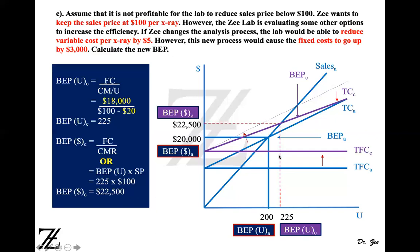Where the solid purple total cost line meets the sales line is the new break-even point: 225 units and $22,500. Compared to the original model in part A, you had to sell 200 units; now you have to sell 225 units. So it is not recommended to proceed with this new process, as both the unit quantity and dollar sales required to reach break-even point have increased.